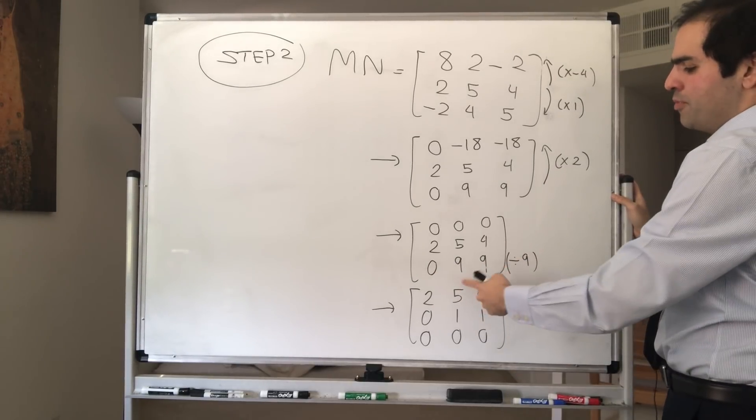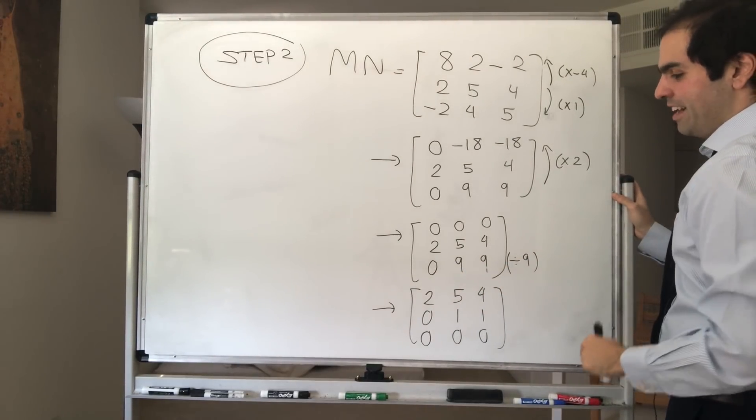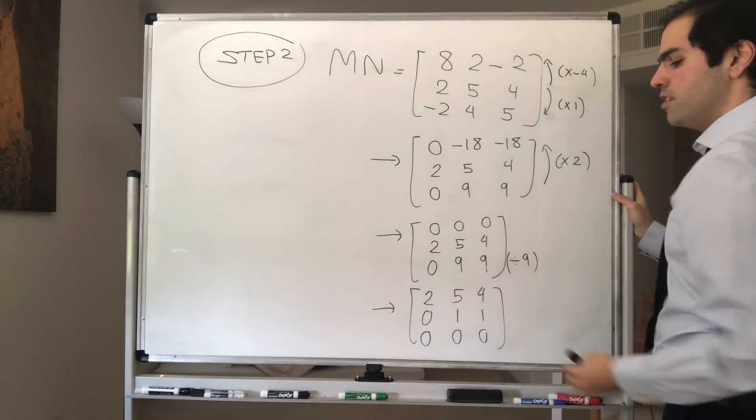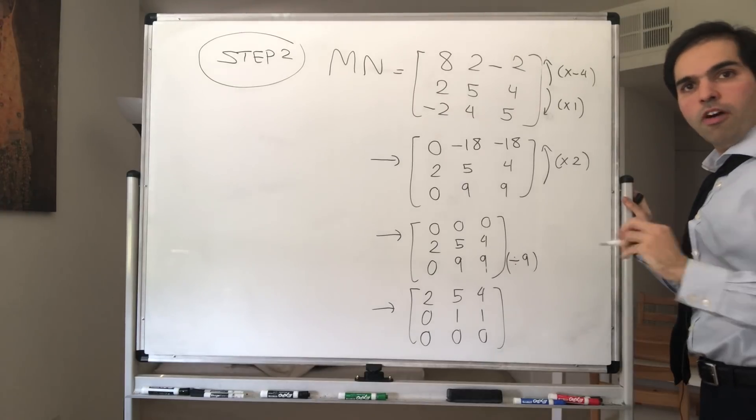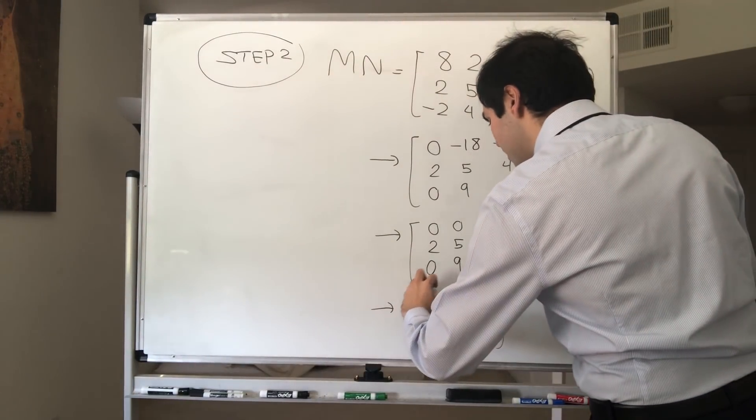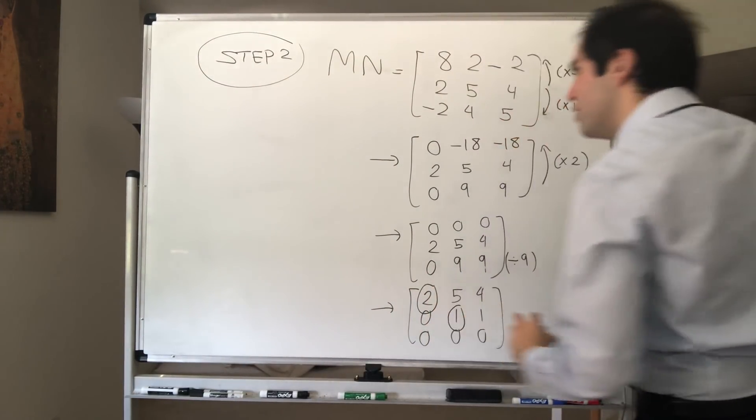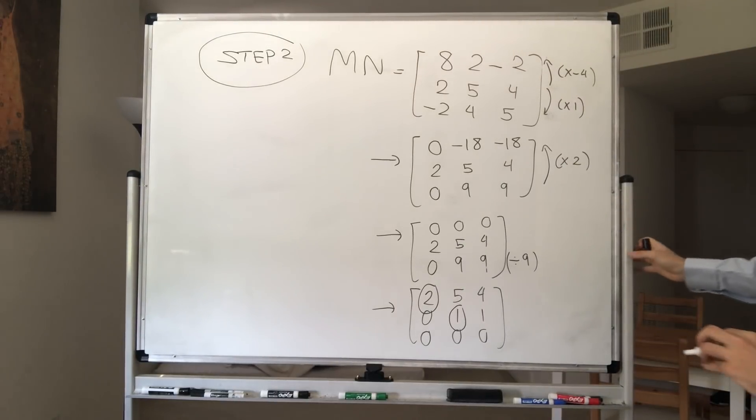And it's optional, but it's nice to divide this by 9. And then you just flip some of the rows, and you get 2, 5, 4, 0, 1, 1, 0, 0, 0. And therefore, what you get, in fact, what's the rank of the matrix? The rank of MN is 2.